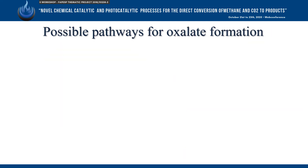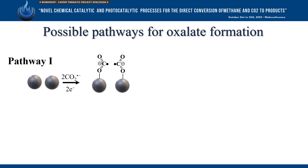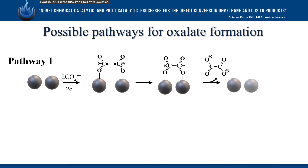There are two possible reaction pathways for the one-electron reduction of CO2 to oxalate. In Pathway 1, the CO2 is reduced on the cathode and the radical anion is stabilized by the surface of the electrocatalyst. It then couples with a neighboring CO2 radical anion to form a C-C bond, generating a surface-adsorbed oxalate, which then desorbs from the surface.